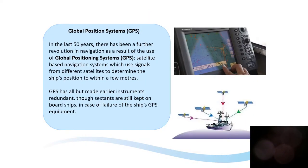In the last 50 years there's been a revolution in navigation using global positioning systems. These are satellite-based navigation systems which use signals from different satellites to determine the ship's position. We still keep sextants on board ships, but we use GPS all the time. There are satellites whizzing around the Earth now, helping make sure that the 50,000 ships bringing all the things we need to our supermarkets and shops know exactly where they are.